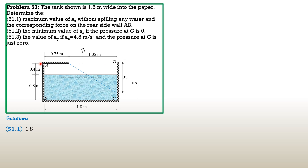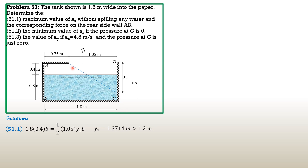Again, volume of air initial is 1.8 times 0.4 times b, perpendicular to the paper or screen. Cancelling out b and solving for y1, y1 equals 1.3714 meters. This is greater than the height of the tank, which is only 1.2 meters. Therefore, that assumption is not possible — the water surface must cross below C.